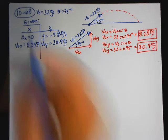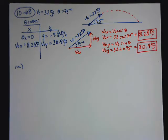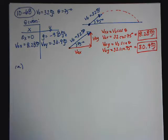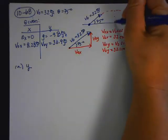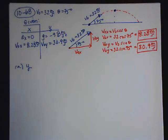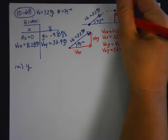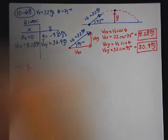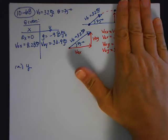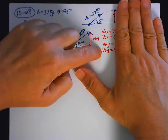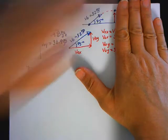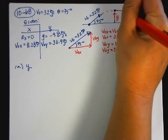Part A asks us to determine the maximum height reached by the projectile, so I want to find Y. Looking at our picture, the maximum height is at the top of the arc. At this maximum height, I already know V-naught Y. And at the maximum height, we can see that V-F-Y is equal to 0.